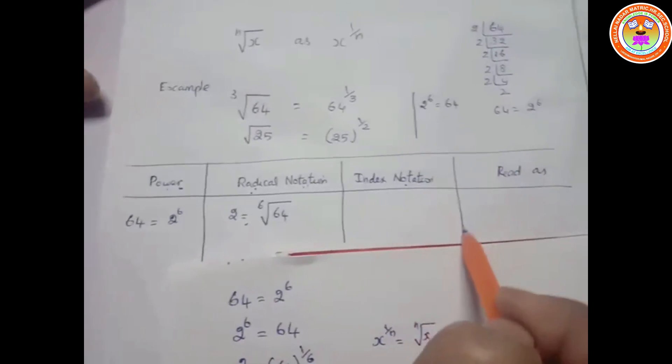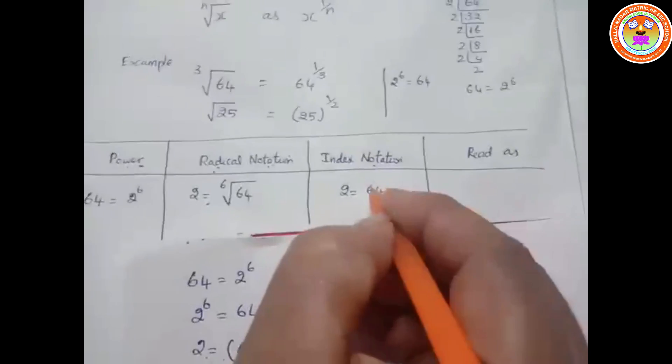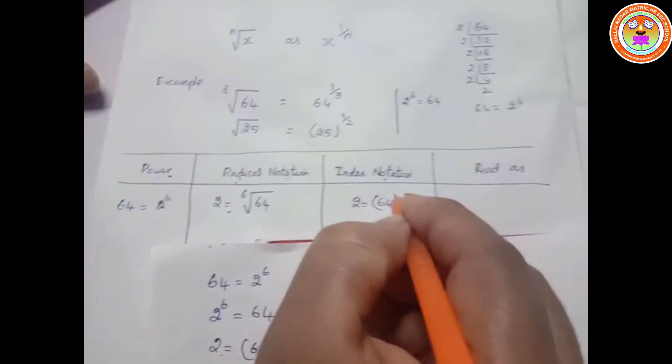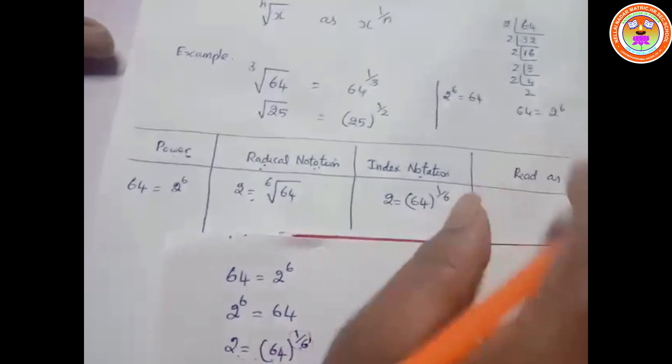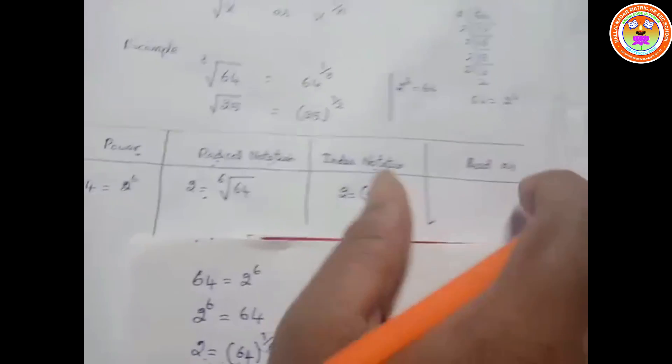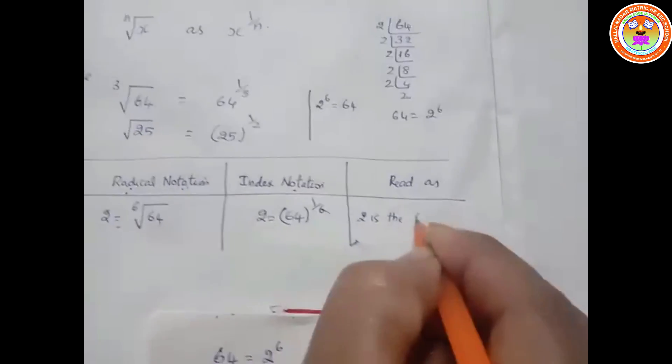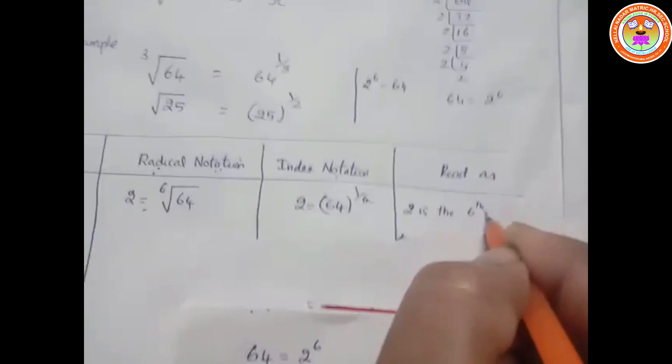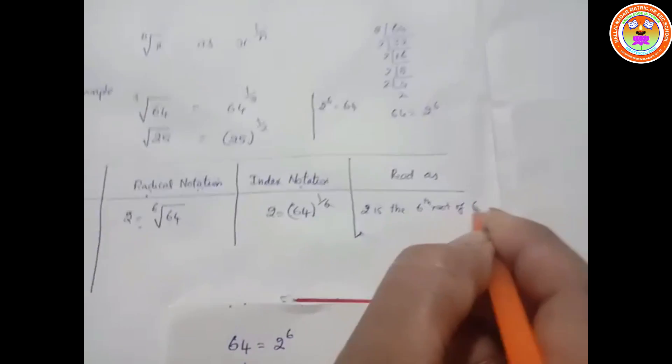Now for index notation: index means power. So 2 equals 64 to the power of 1 by 6. You can read this as: 2 is the 6th root of 64.